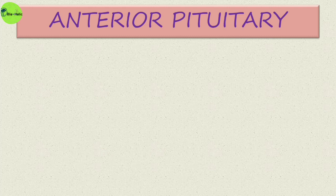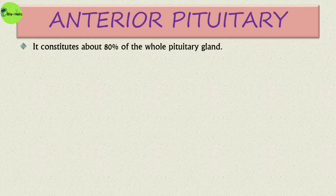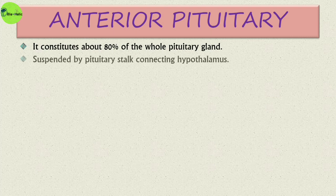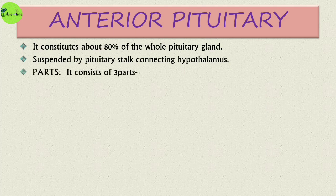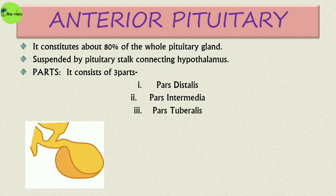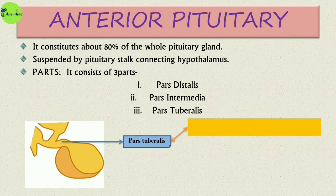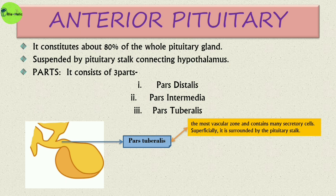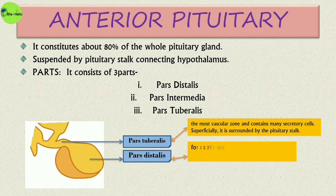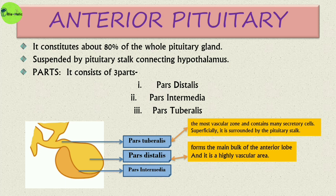The anterior pituitary constitutes about 80 percent of the whole pituitary gland and is suspended by the pituitary stalk connecting to the hypothalamus. It has three parts: the pars distalis, pars intermedia, and pars tuberalis. The pars tuberalis is the most vascular zone and contains many secretory cells; superficially it is surrounded by the pituitary stalk. The pars distalis forms the main bulk of the anterior lobe and is a highly vascular area. The pars intermedia lies between the pars distalis and neurohypophysis.